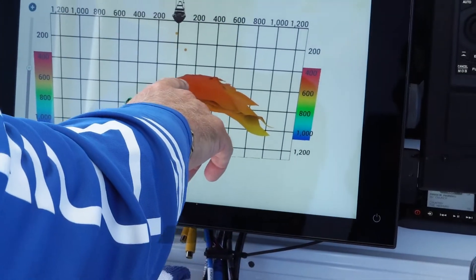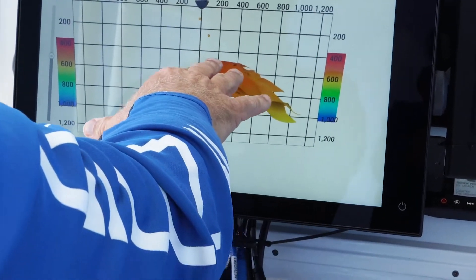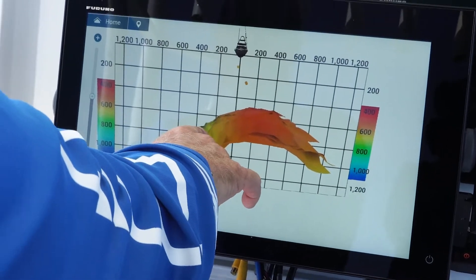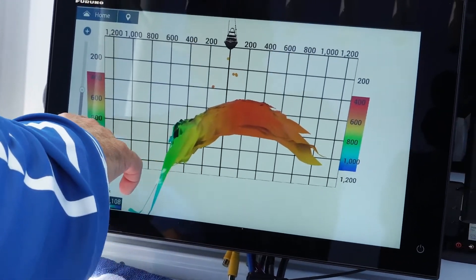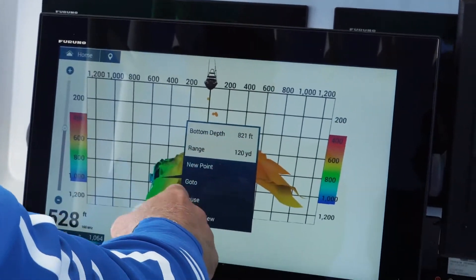So what we have here, we're right on top of the Marathon hump. This is our 3D imagery. You can see on the left side it's actually dropping down deeper, and this color coding will show you the actual depths, or you can even just touch on it and it'll tell you as well.